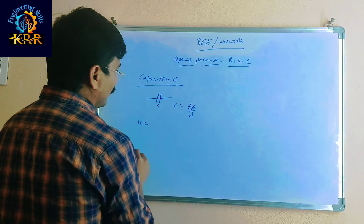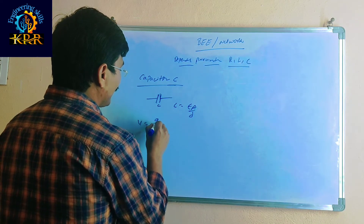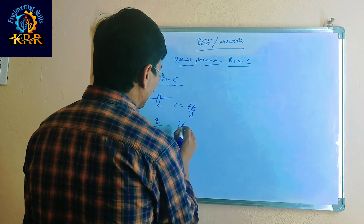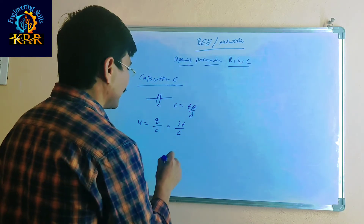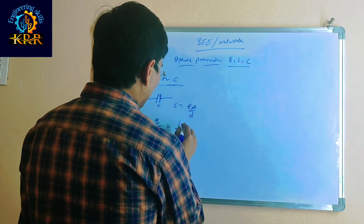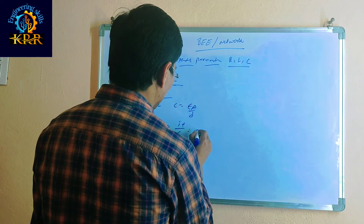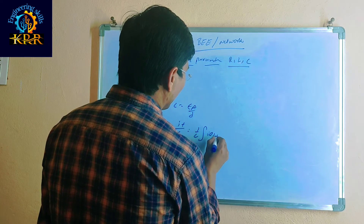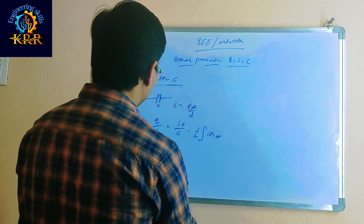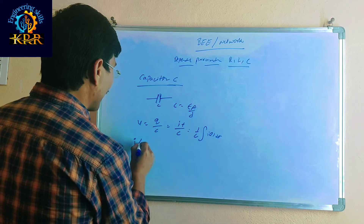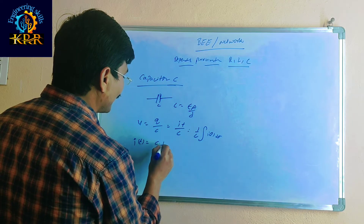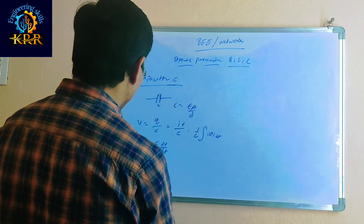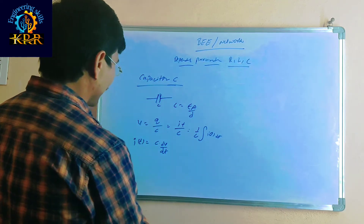If V is equal to charge by capacitance, then charge Q equals I(t) into t divided by C. By integration, V(t) equals 1 by C into the integral of I(t) dt. After that, I(t) is equal to C into dV by dt. You will get the current I(t) from C·dV/dt. This gives the relationship between voltage and current for a capacitor.